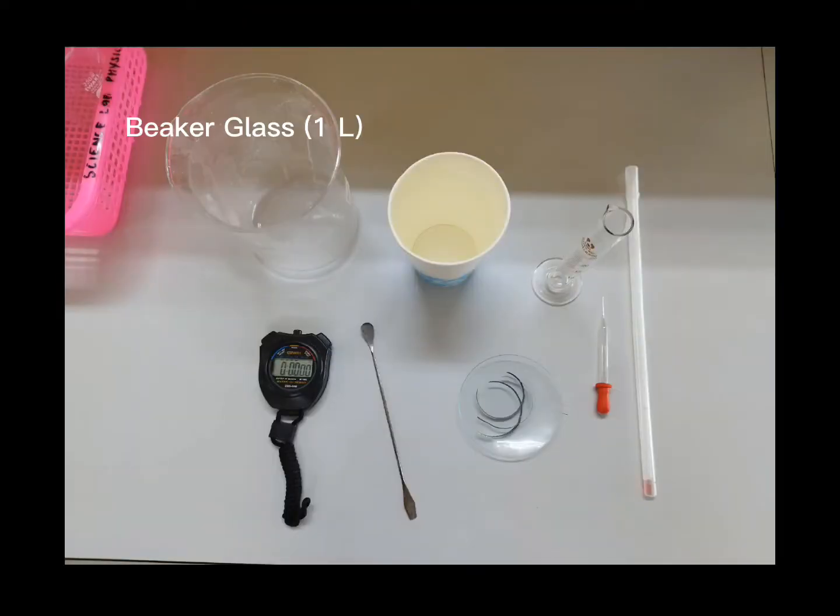First we have the apparatus: a beaker glass, a paper cup, a measuring cylinder, a stopwatch, a spatula, a pipette, and a thermometer.